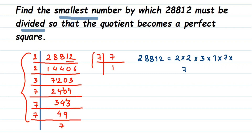If a number is a perfect square, the factors will all be in proper pairs. If not, some factor will be left unpaired. So pairing up: 2 forms one pair, then 3 has no pair — it's a single number. Then the 7s form pairs. You can see that 3 is alone with no pair, which means 3 is the number that must be removed so that the result becomes a perfect square.